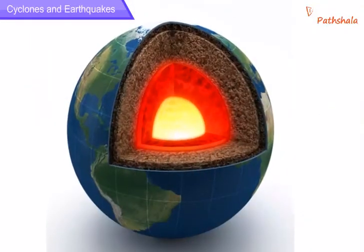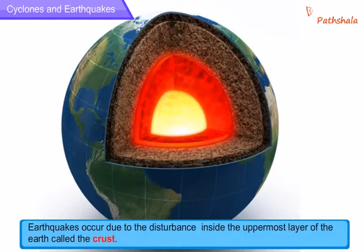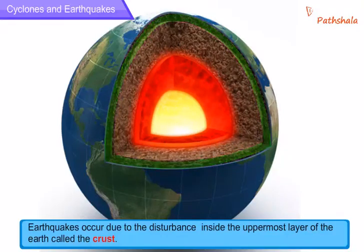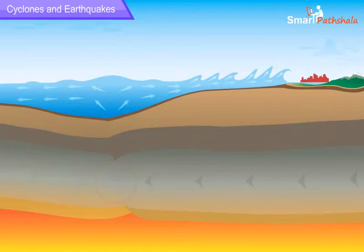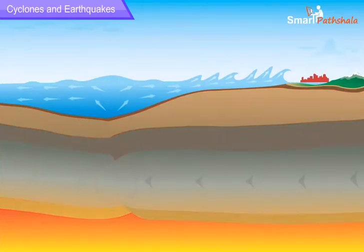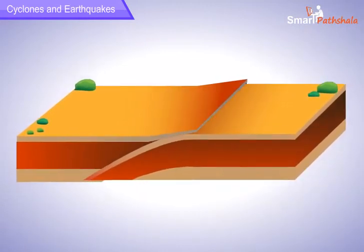Now let us know the cause for the occurrence of earthquakes. Earthquakes occur due to disturbance inside the uppermost layer of the earth called the crust. The earth's crust is not a single piece — it is fragmented, and each fragment is called a plate. These plates are in continual motion. When a plate goes under another plate due to collision, it causes disturbance in the earth's crust, which can be seen as an earthquake on the surface of the earth.